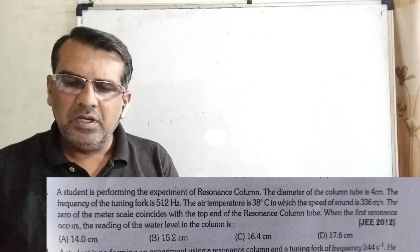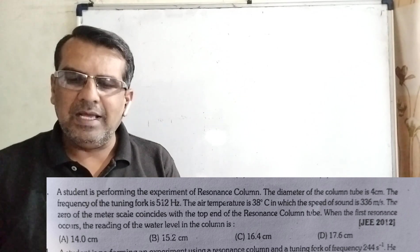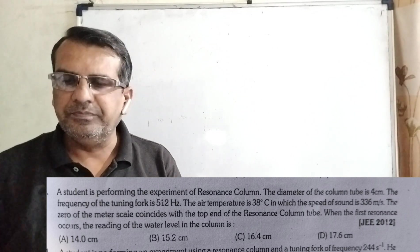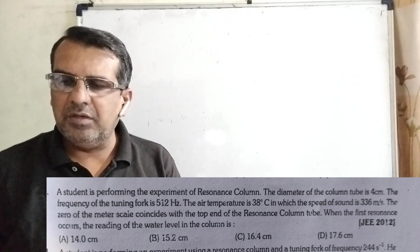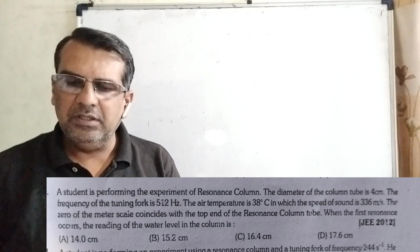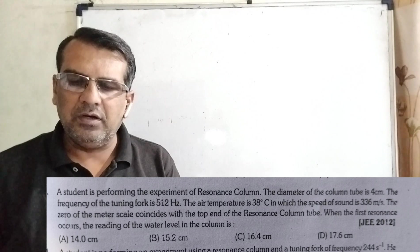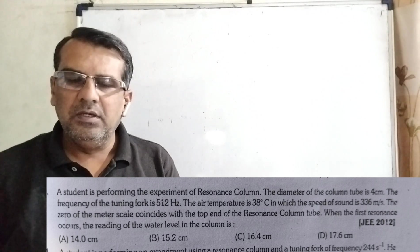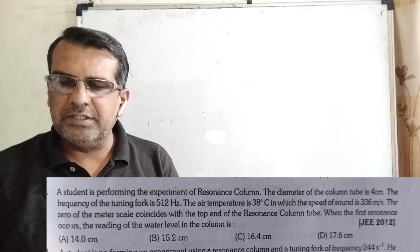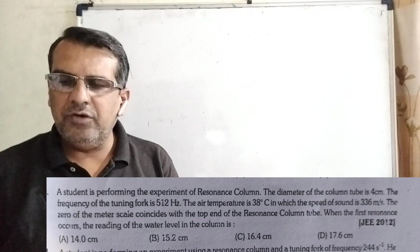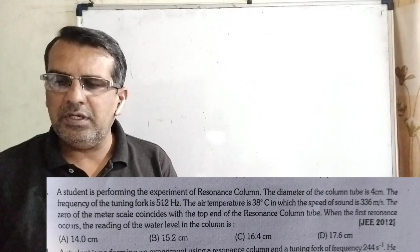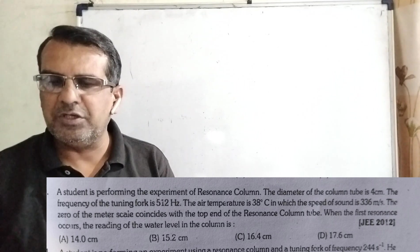Now here is the question. A student is performing the experiment of resonance column. The diameter of the column tube is 4 cm. The frequency of the tuning fork is 512 Hz. The air temperature is 38 degrees Celsius, in which the speed of sound is 336 meters per second.